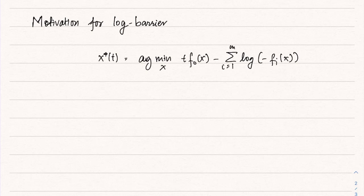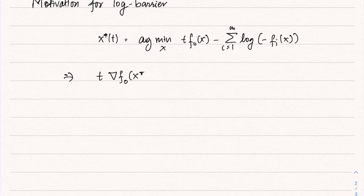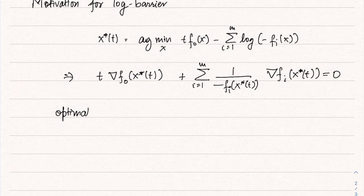Let us write down the optimality condition for this problem. Note that this problem is a convex problem because log(−fᵢ(x)) for a convex function is actually also a convex function. If we differentiate with respect to x and substitute x*(t), we obtain: t·∇f₀(x*(t)) plus the summation over i from 1 to m of 1/(−fᵢ(x*(t))) times ∇fᵢ(x*(t)) equals 0. This is the optimality condition for x*(t).